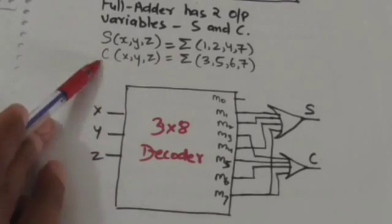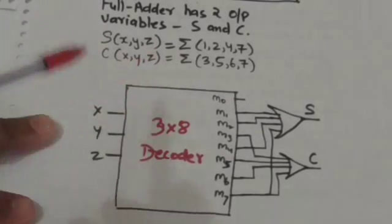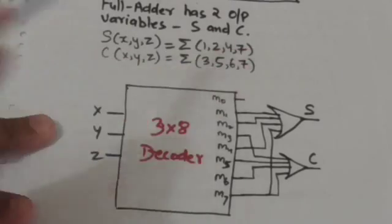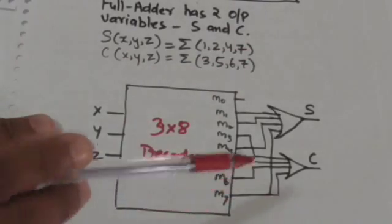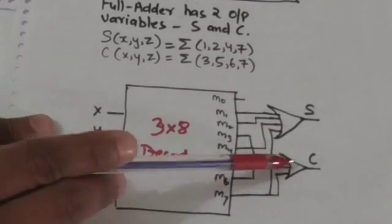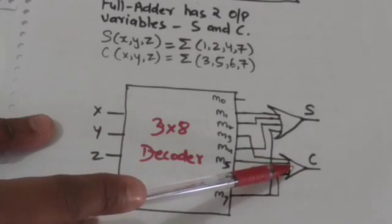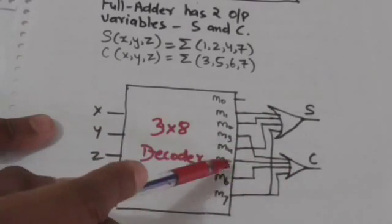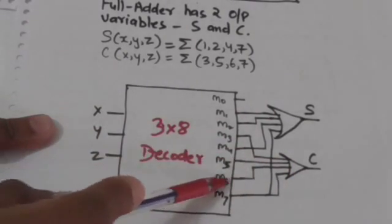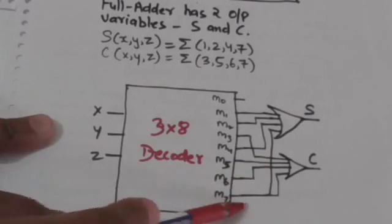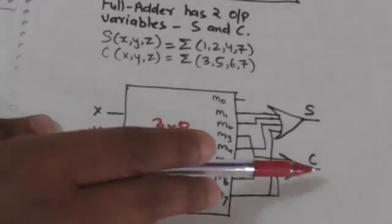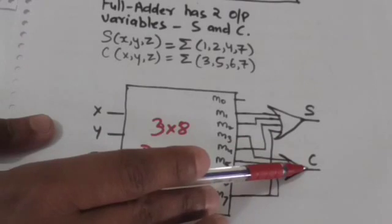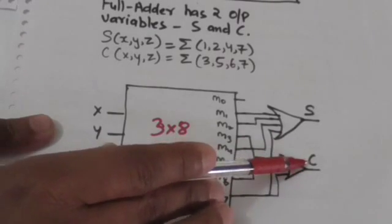C is the sum of minterms m3, m5, m6, and m7. So we use an OR gate to form the sum of minterms m3, m5, m6, and m7, and the output of this OR gate will be C.